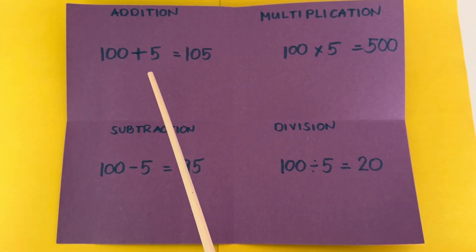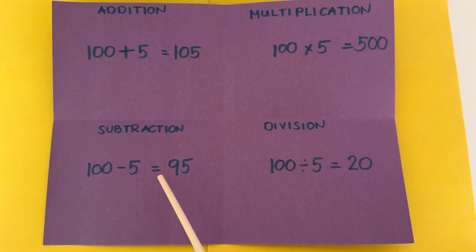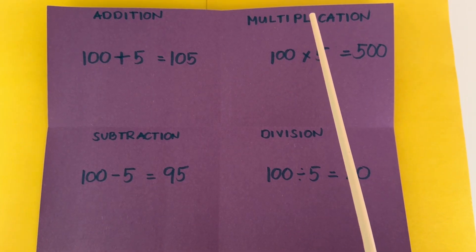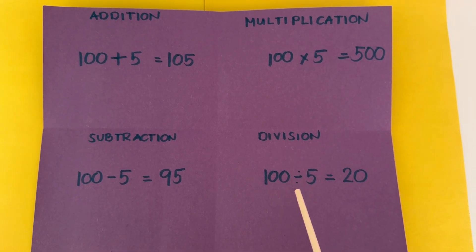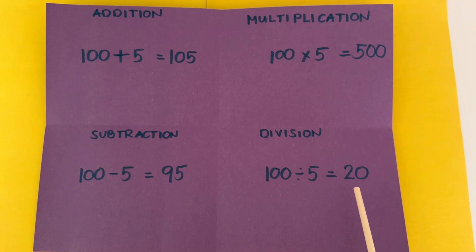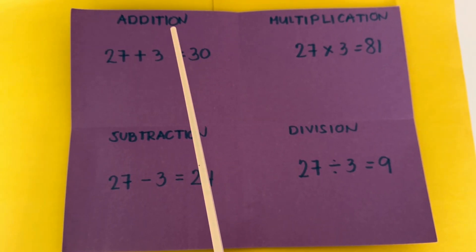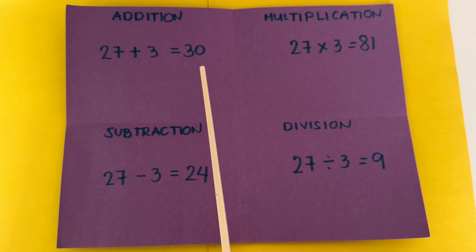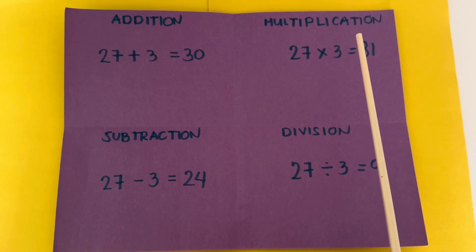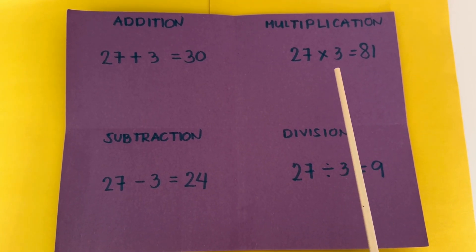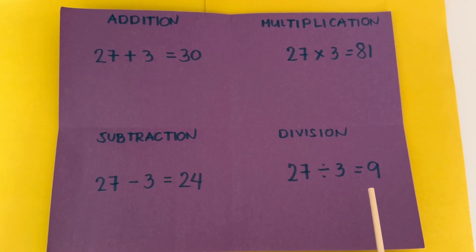Next example: in addition, 100 plus 5 is equals to 105. In subtraction, 100 minus 5 is equals to 95. Multiplication: 100 multiplied by 5 is equals to 500. In division, 100 divided by 5 is equals to 20. And last but not the least, let's try to do addition: 27 plus 3 is equals to 30. In subtraction, 27 minus 3 is equals to 24. Let's multiply: 27 multiplied by 3 is equals to 81. In division, 27 divided by 3 is equals to 9.